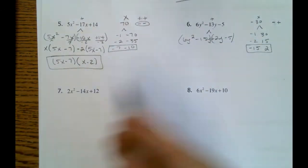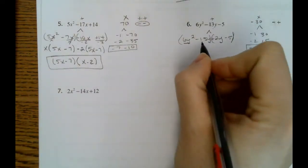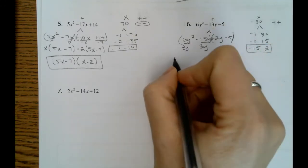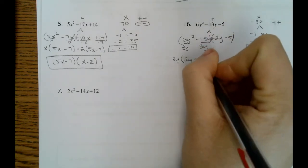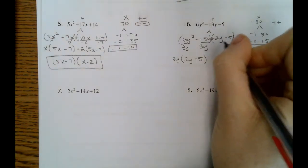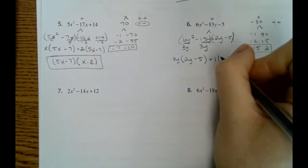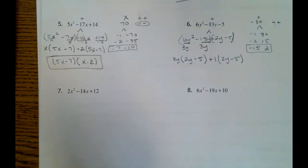And then we'll do our grouping method. So in our first set, it looks like we can pull out a 3y would be our GCF. So we're left with 2y minus 5. Here you might notice we already have a 2y minus 5, and that's okay. We have a GCF of 1. So we'll pull out a 1. Our parentheses are the same.